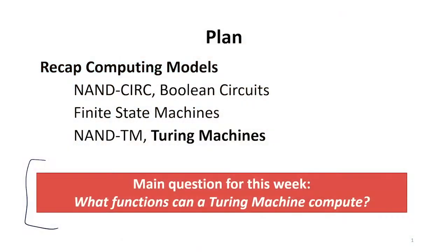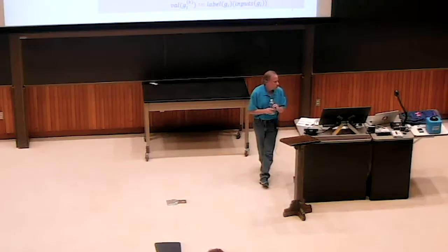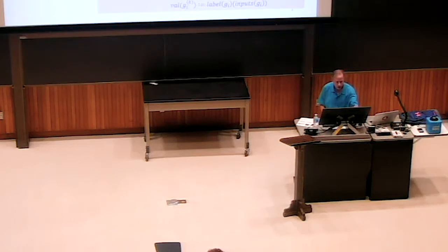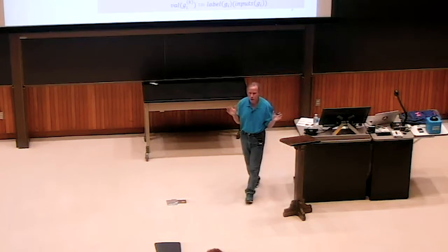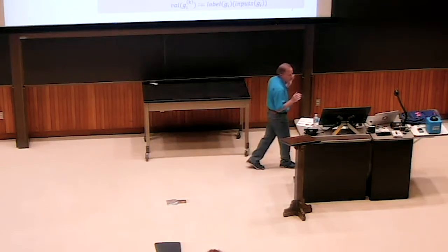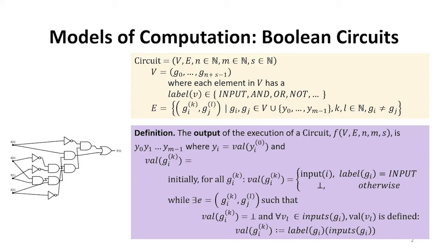We're going to start with a bit of recap. We've seen a bunch of computing models. We started with Boolean circuits. Those correspond to things we might build with transistors, but we have a mathematical model and we can describe all circuits as a set of nodes and edges. It's a graph where we're doing some simple operation at all the nodes and we can define the computing model.